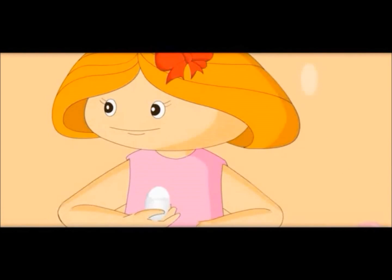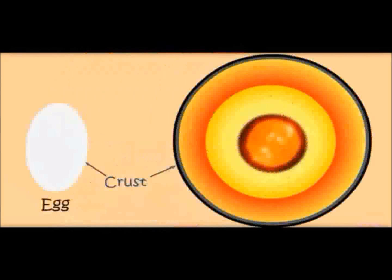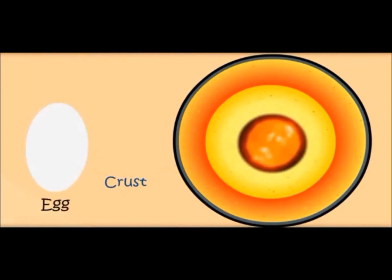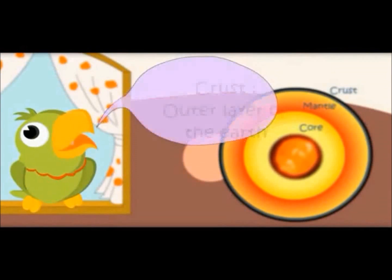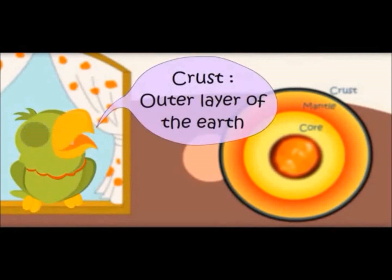You see this outer layer? This is like Earth's crust. Crust is the upper layer of the Earth, where we all live. All trees and animals live on the crust of the Earth. Yes, you are right. All animals and trees live on Earth's crust. Crust — outer layer of the Earth.